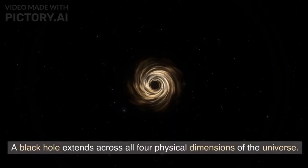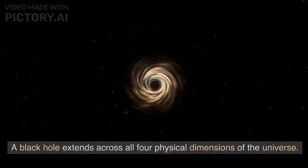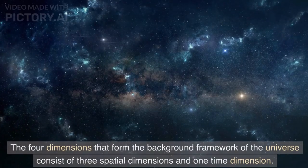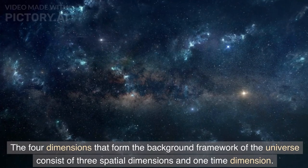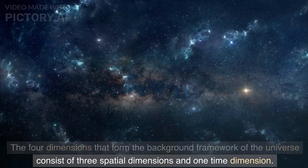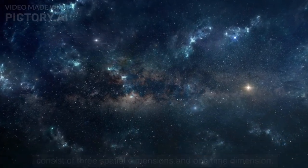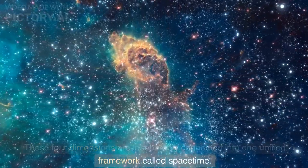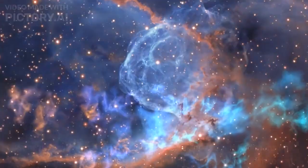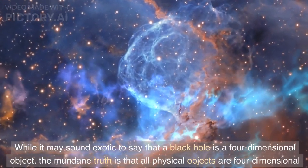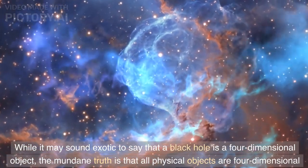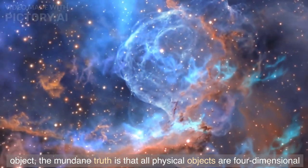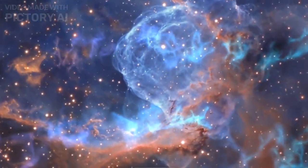A black hole extends across all four physical dimensions of the universe. The four dimensions that form the background framework of the universe consist of three spatial dimensions and one time dimension. These four dimensions are inseparably connected into one unified framework called spacetime. While it may sound exotic to say that a black hole is a four-dimensional object, the mundane truth is that all physical objects are four-dimensional objects.